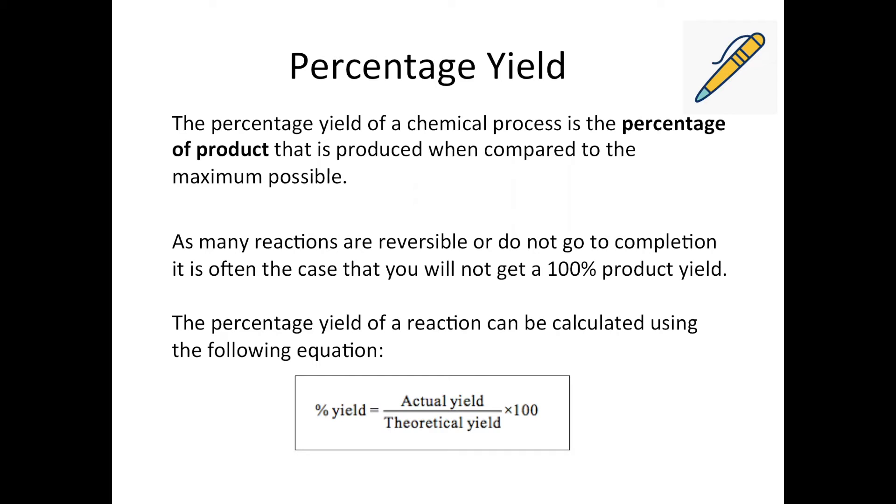So the equation we use for calculating percentage yield is the one that's down here in this box, so it's the actual yield, so that's how much you actually make when you run the reaction, and then that's divided by the theoretical yield, which is how much you could make if the yield was 100%. So in order to work out the theoretical yield, it's very similar to doing a calculation from equation, like you would have done in National 5, so we use the mole ratio from the balanced equation to work out how much product we could make in an ideal world if everything was getting converted, and then to express that fraction as a percentage we times about 100.